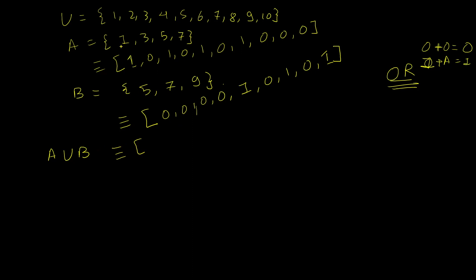Taking the bitwise OR: 1 OR 0 = 1, and so on for each position. I'm checking whether each element should be placed in the new set — if it's a member of the first set or the second set. The OR operation does exactly that.